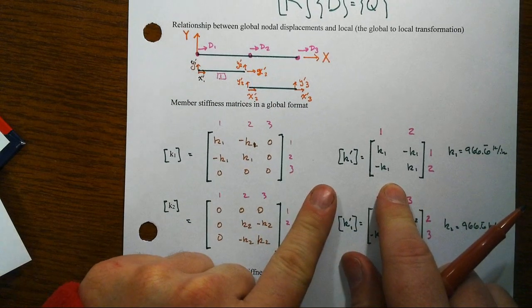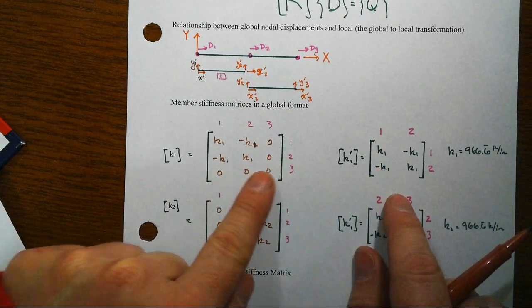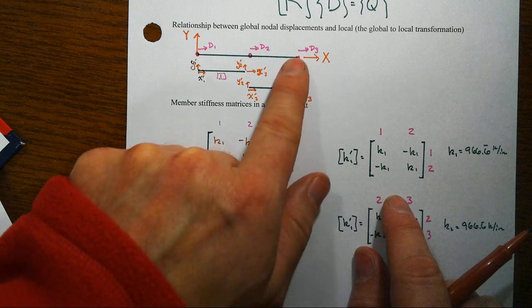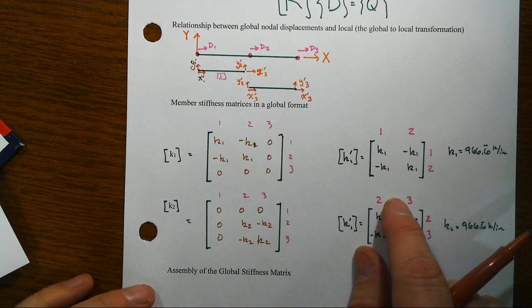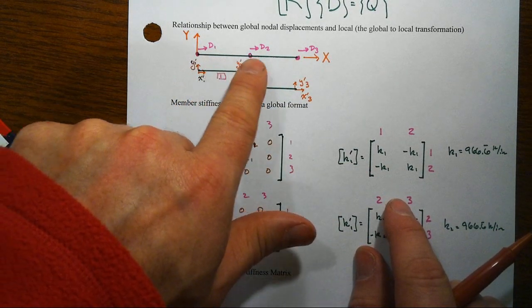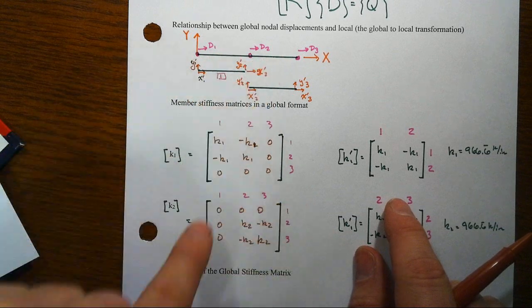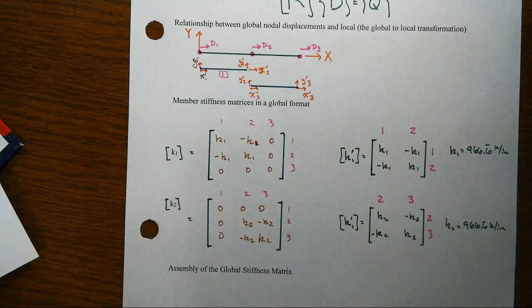All we've really done in this very simple case is just added zeros where that member was not attached in the global system. It's attached indirectly through another member, but not directly. And same thing over here.